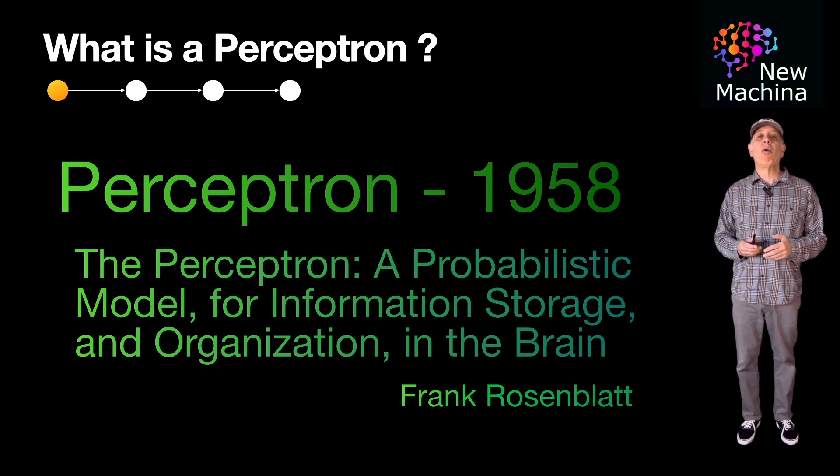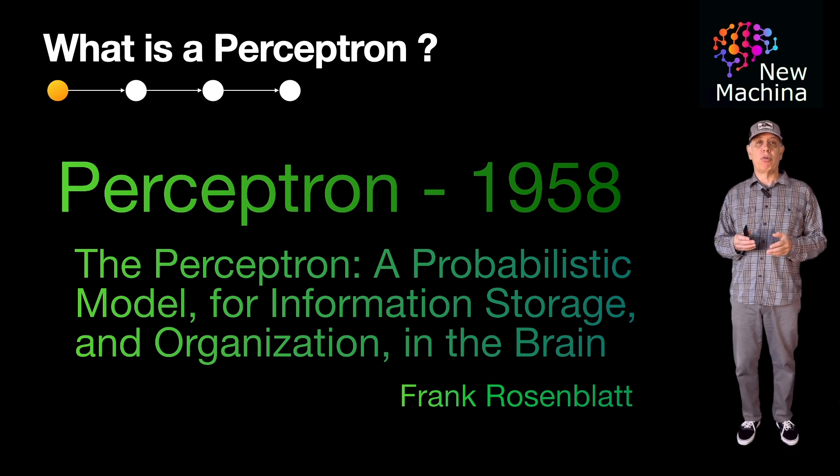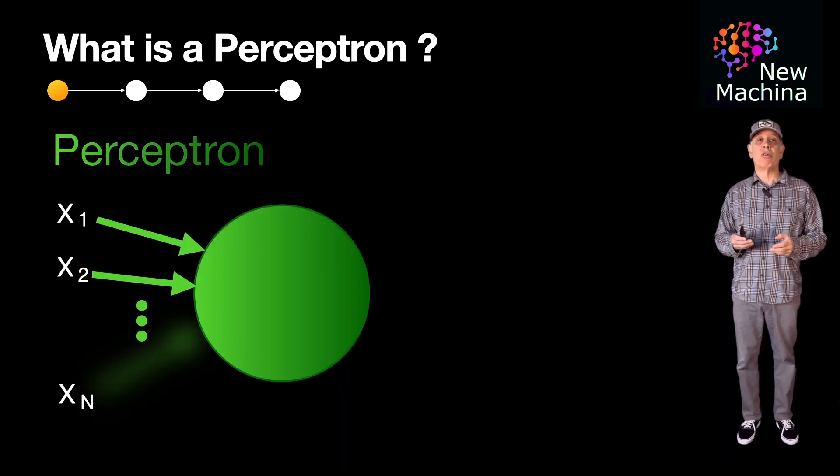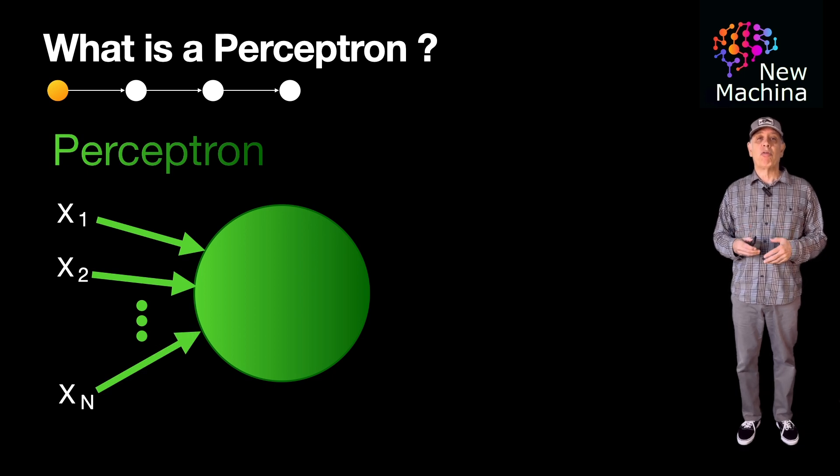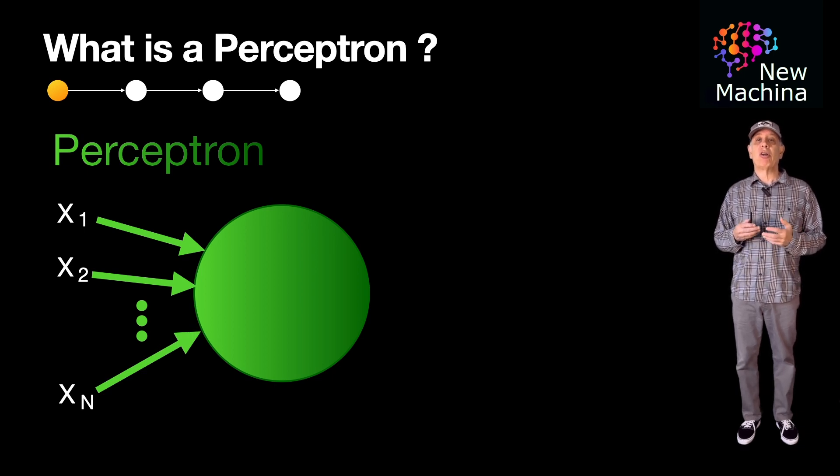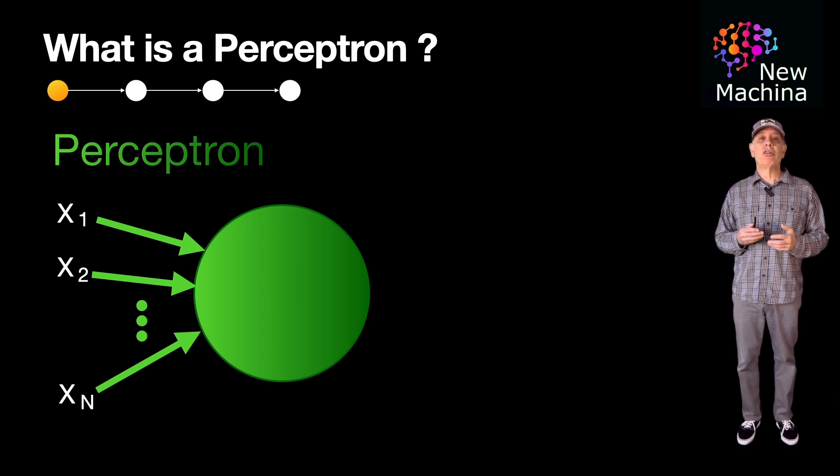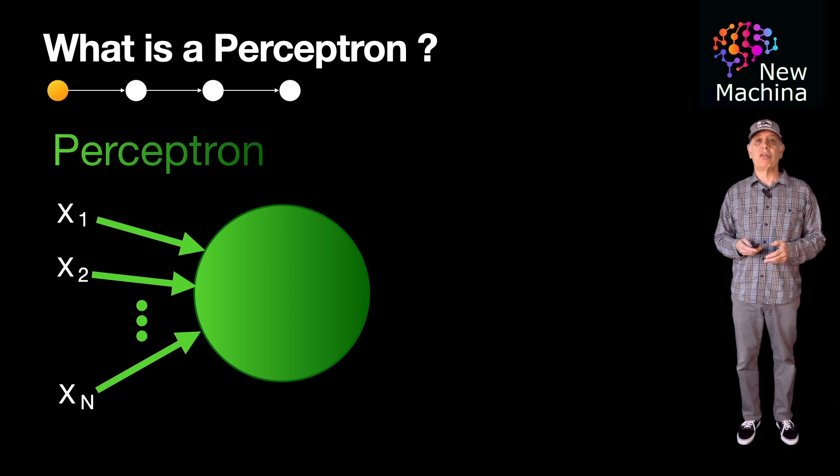So what are the components of Frank Rosenblatt's perceptron? The first is inputs are referred to as features. These are the values or variables that represent the characteristics of the data being fed into the model. These inputs are used to make predictions or classifications.